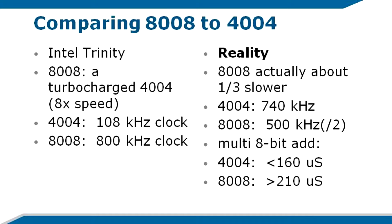It says that the 4004 had a clock speed of 108 kHz and that the 8008 had an 800 kHz clock, and that meant there was an 8 to 1 ratio. Well, first of all, the clock speed on the 4004 was 740 kHz. The 108 number comes from a misunderstanding — an instruction cycle running at 740 kHz takes 8 clock steps, giving 10.8 microseconds. That's not 108 kHz.